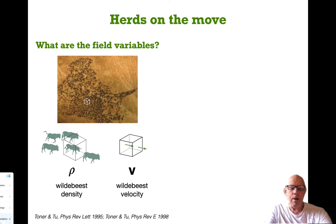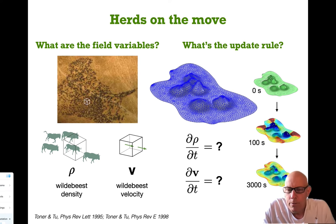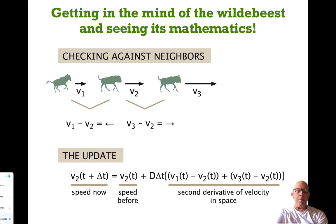What are the field variables? What fields do we need to keep track of to describe the behavior of these wildebeest? We're going to invoke the wildebeest density—how many wildebeest are there per unit area—and we will use the wildebeest velocity. This should conjure up an idea similar to what you would think about when thinking about water and the flow of water or the breaking of waves. There you're going to keep track of the density and you're going to keep track of the velocity field.